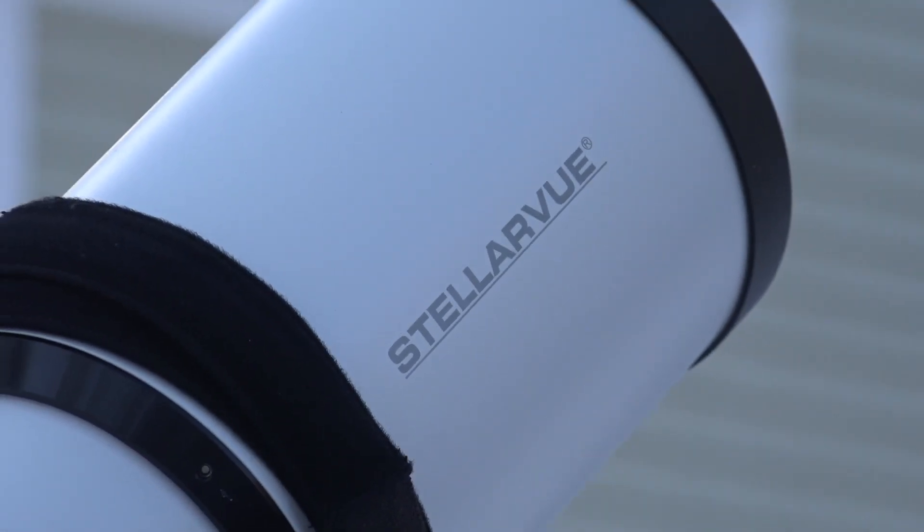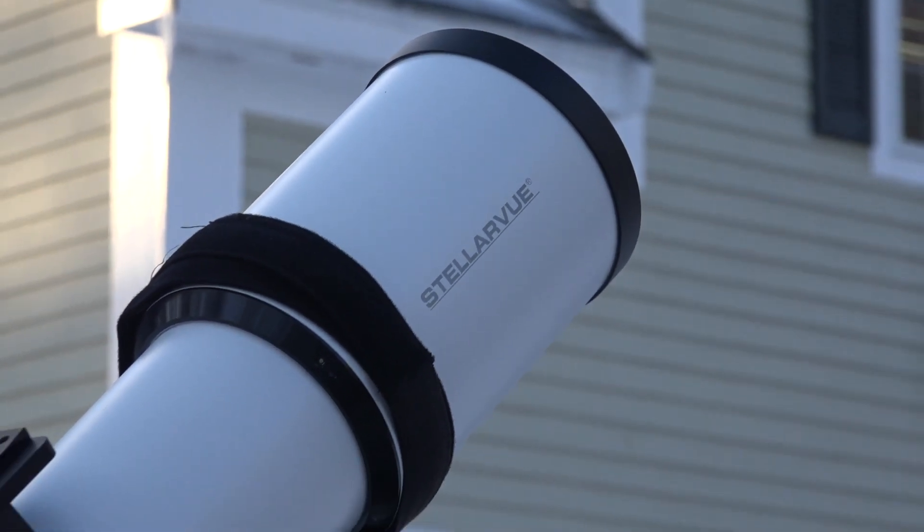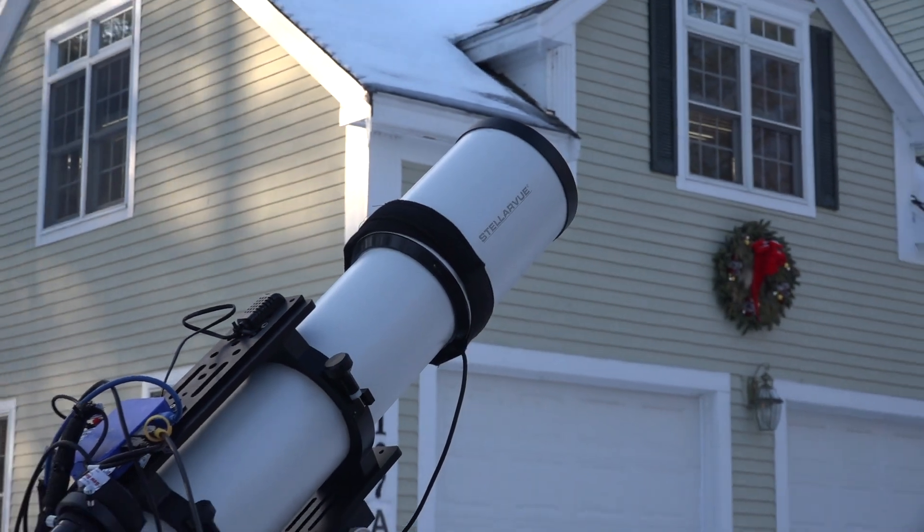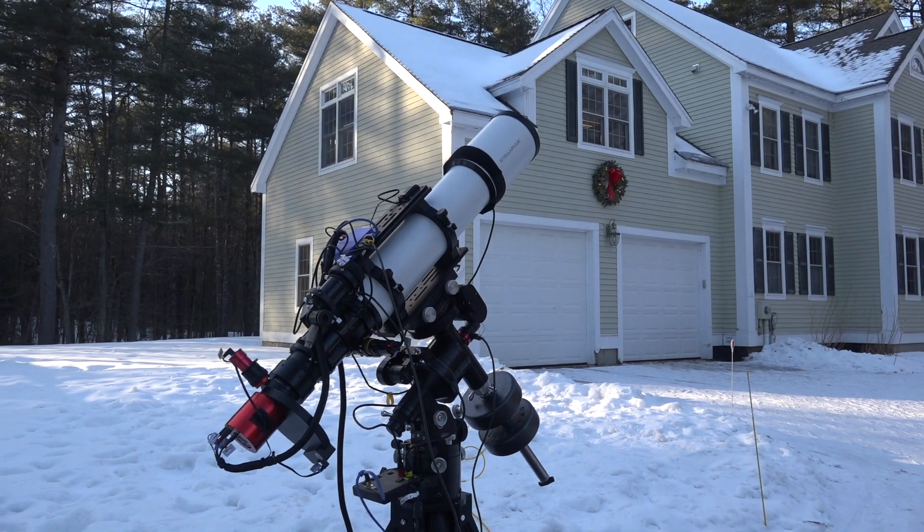It's about 17 degrees and the temperatures are dropping to zero with a strong wind, and I finally have taken the opportunity to set up my Stellar View SVX 130T telescope. Here you can see it on its Losmandy G11G mount.